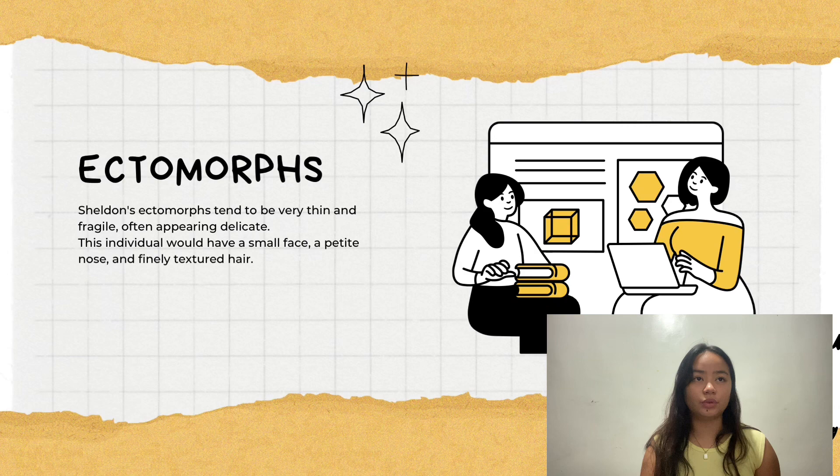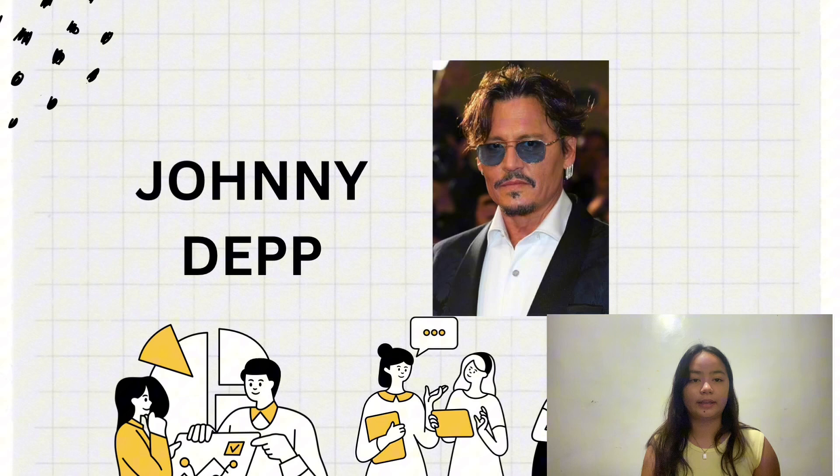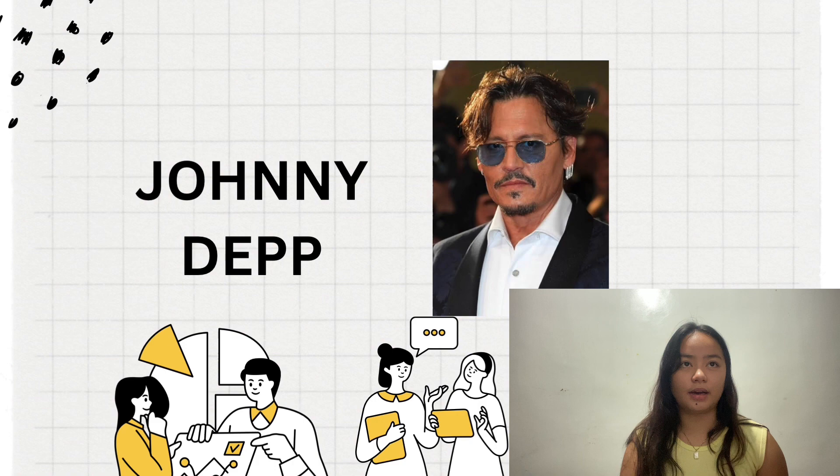According to Sheldon, ectomorphs tend to be very thin and fragile, often appearing delicate. These individuals would have a small face, a petite nose, and finely textured hair.